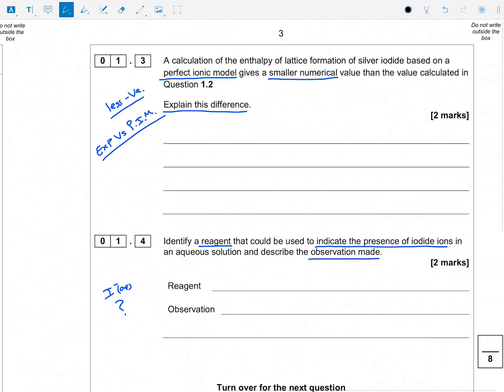So 1.3. Now this is a question about the perfect ionic model. Why does that give a smaller numerical value than what we've just calculated in 1.2? Well, of course, with the perfect ionic model, we assume no covalent character. So if it's a smaller numerical value, that means it's less negative.